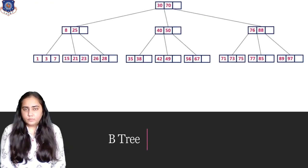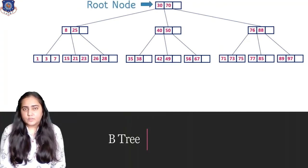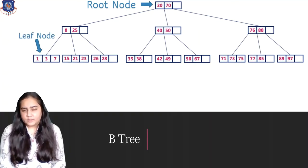So here is an example of a B-tree. This is what a B-tree looks like. What you can see on the top most is known as the root node. All the nodes in the bottom which do not have anything else below them are known as leaf nodes.